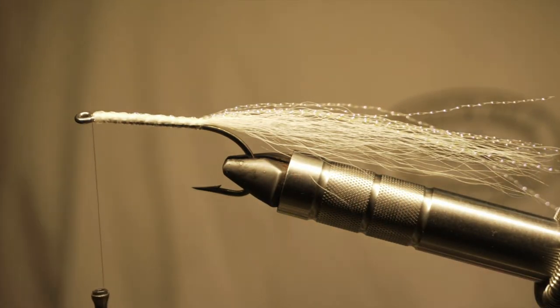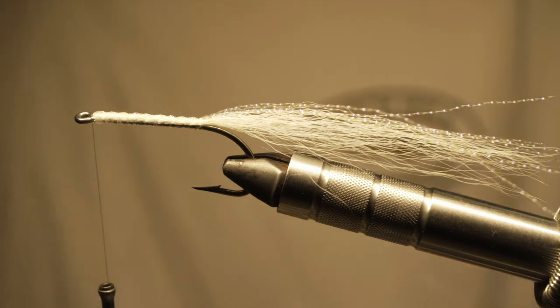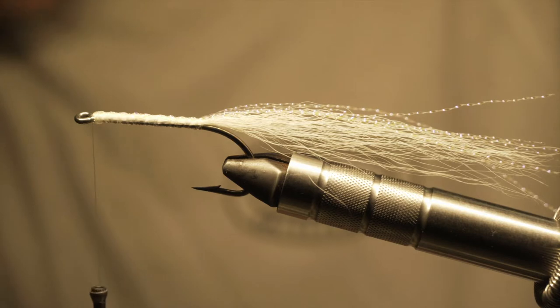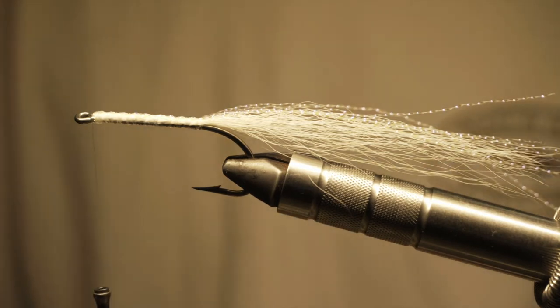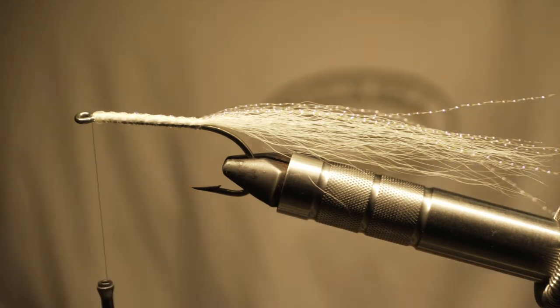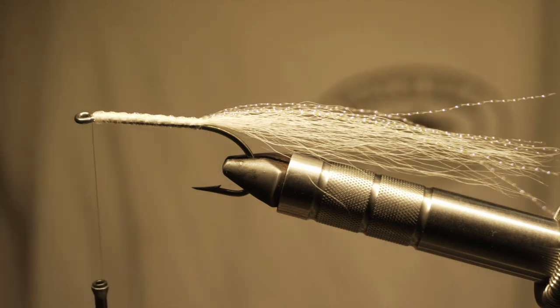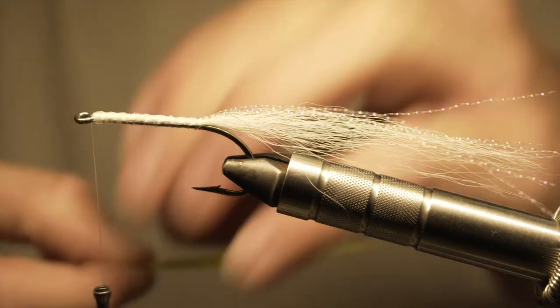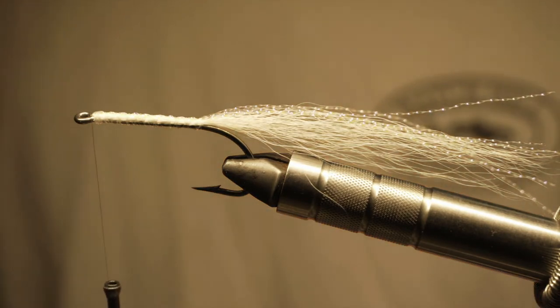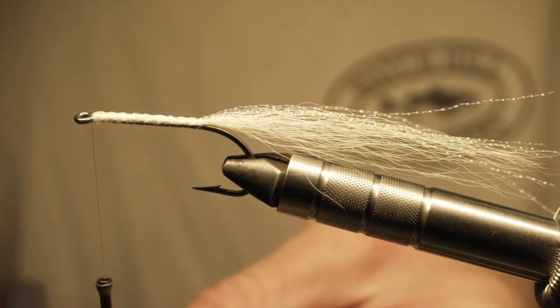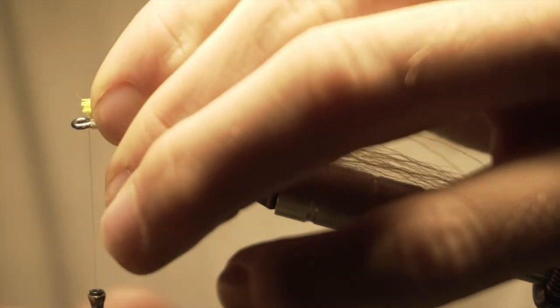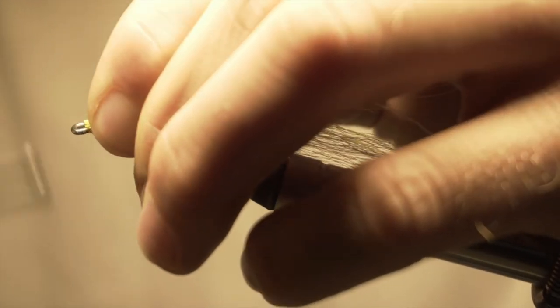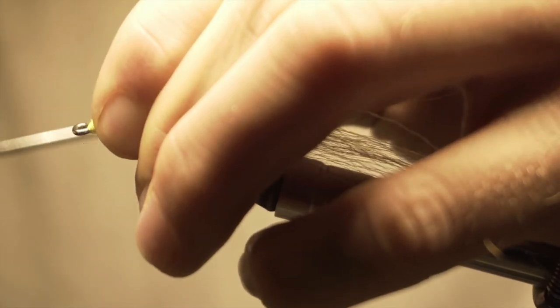Now we're ready for the chartreuse. Take a little bit less of the chartreuse than you did of the white. It's more of just an accent piece than the whole color of the fly. Now I'll measure that out. Looks about right. I don't need to worry about organizing this little bunch because it was already pretty good, it had a good taper to it.